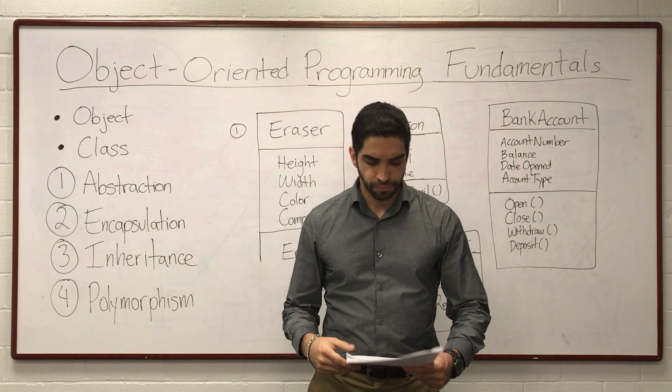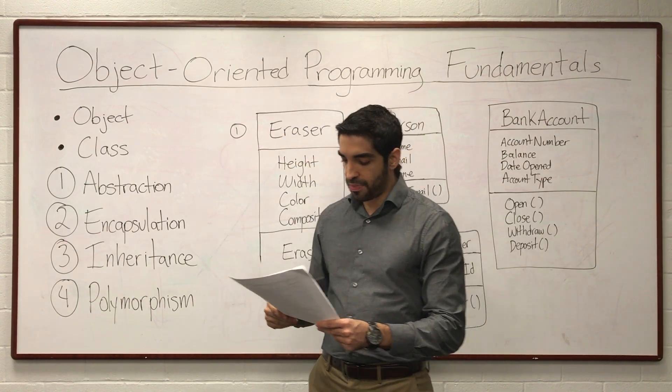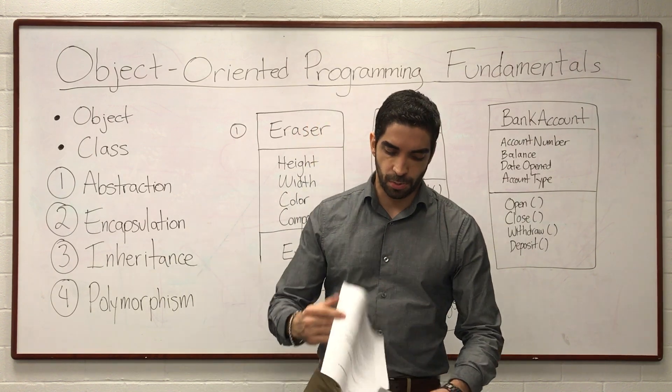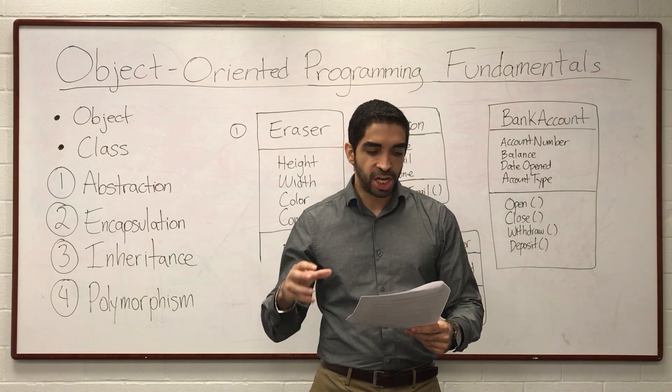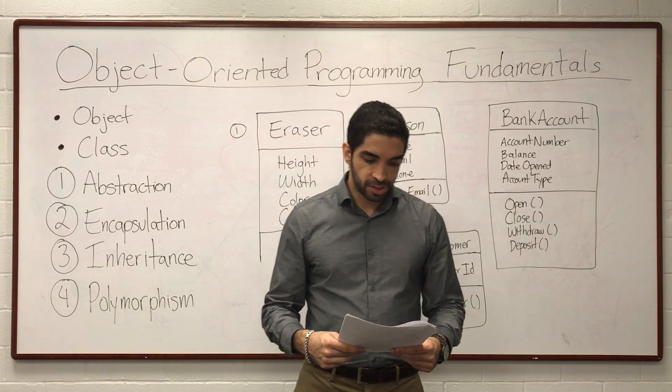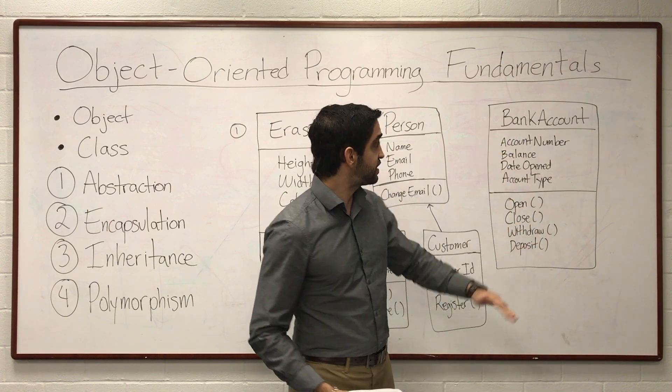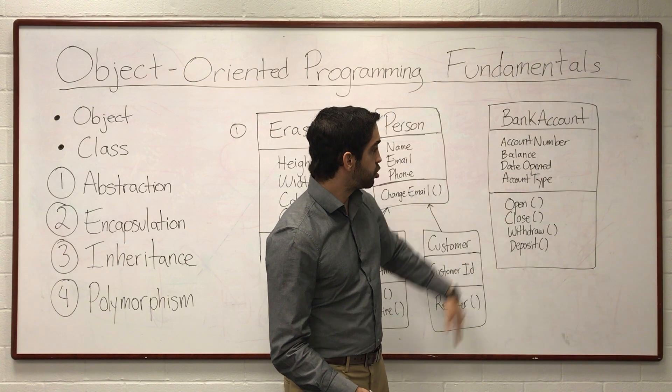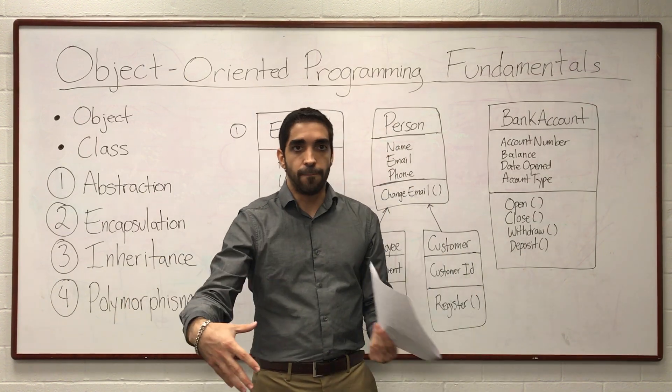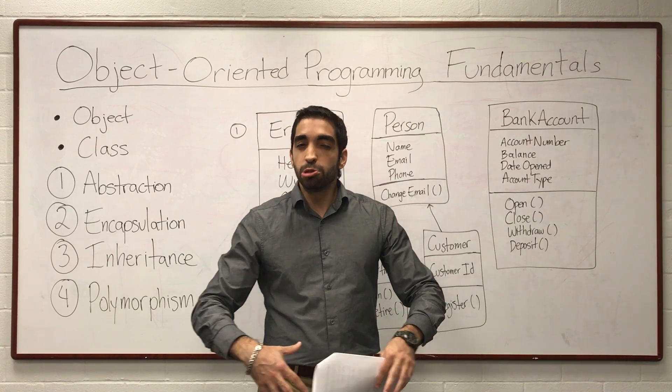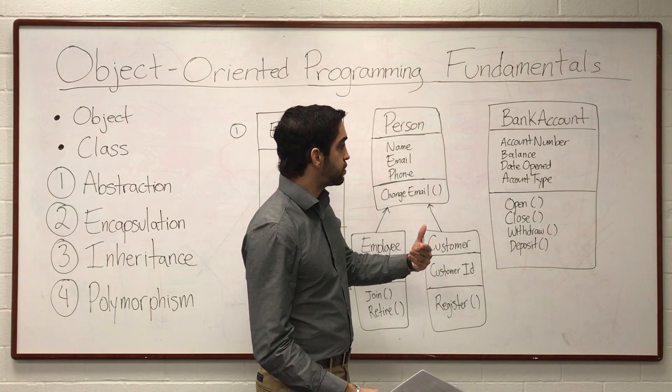The second one would be encapsulation. The idea of encapsulation is that you enclose or encapsulate your object's attributes and methods, and then you hide everything about that object except what is absolutely necessary to expose. The purpose is to reduce dependencies between different parts of the application so that a change in one place won't cascade down and require multiple changes elsewhere. For example, let's say you have this bank account class. You're building a finance mobile application. You have a bank account class with certain properties like account number, balance, and certain methods like open, close, withdraw, etc.